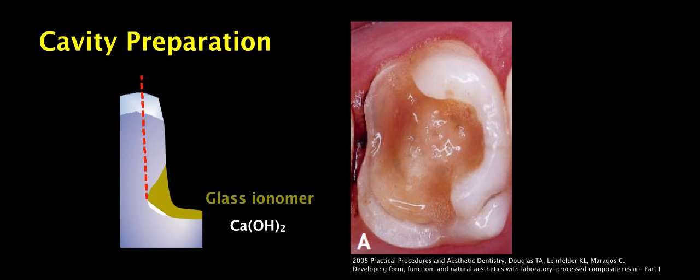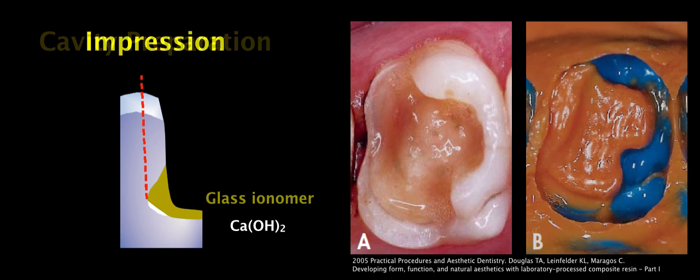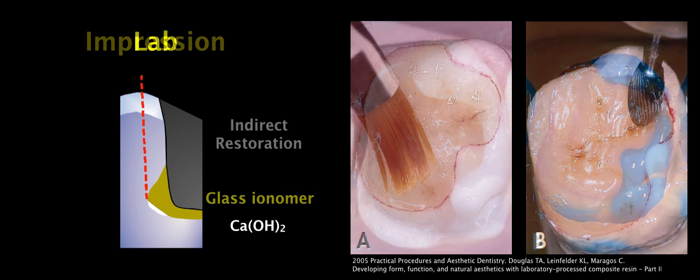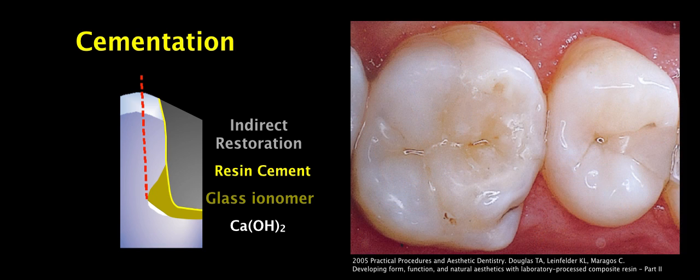The technique for indirect composite restoration has been described in such a way: if you have a deep cavity we can place calcium hydroxide or glass ionomer for protection of the pulp, but if we do not have such a deep cavity we can make our impression directly on enamel and dentin and then the indirect restoration is fabricated in the cast and subsequently cemented in the mouth with the help of a resin cement.